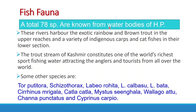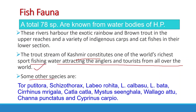Regarding fish fauna of the Indus system, a total of 78 species are known from the water bodies of Himachal Pradesh. These rivers harbor exotic rainbow and brown trout in the upper reaches and a variety of indigenous carps and catfishes in the lower sections. The trout streams of Kashmir constitute one of the world's richest sport fishing waters, attracting anglers and tourists from all over the world. Other important species are Tor putitora, Schizothorax, Labeo rohita, Labeo calbasu, Labeo bata, Cirrhinus mrigala, Catla catla, Mystus seenghala, Wallago attu, Channa punctatus, and Cyprinus carpio.